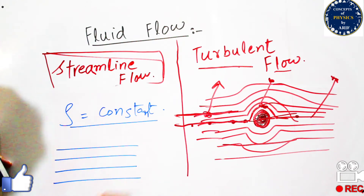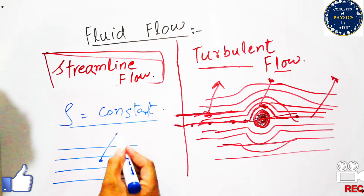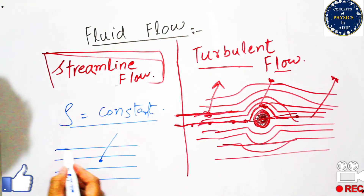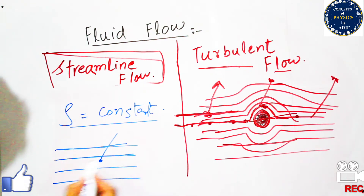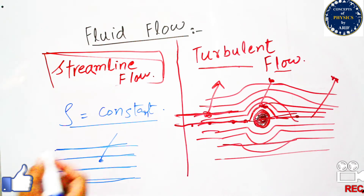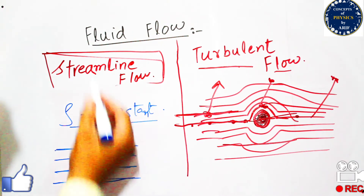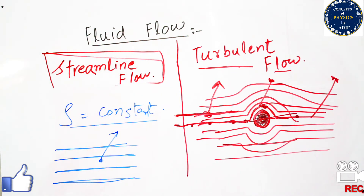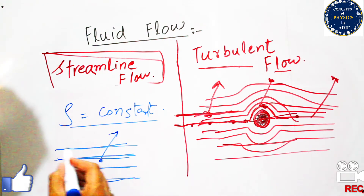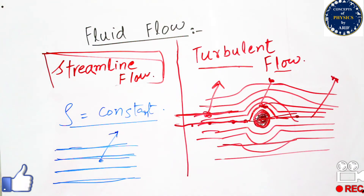Non-viscous means there is no internal friction between the layers of the flowing fluid — all the layers are moving above each other but there is no internal friction between them. The third property of streamline flow is that the fluid flow should be steady. This is the definition and difference between streamline flow and turbulent flow.